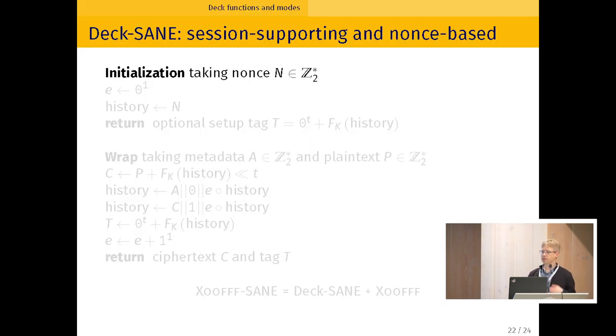So having a deck function and using this idea, you can build some modes. I'm going to give one mode as an example. We call this mode DEC-SANE, a session-based authenticated encryption mode, session and nonce-based. So first session because it's a stateful object, and we can authenticate the encryption of messages. And every time the tag authenticates not only the current message, but all the messages, the sequence of all the messages that have been received so far. That's the session. So at initialization, it takes a nonce. Then we are going to use some bit E, just one bit that is going to toggle from zero to one every time we switch from one message to the other. History is going to capture the input of my deck function. So it starts with just N, the nonce. And we create an optional tag on just the session setup. It just authenticates the nonce.